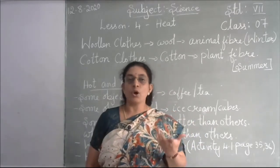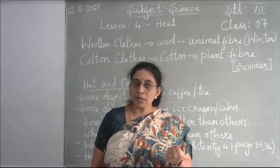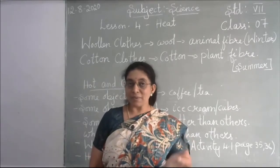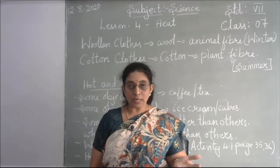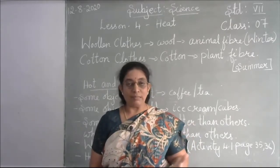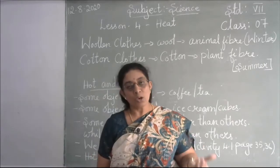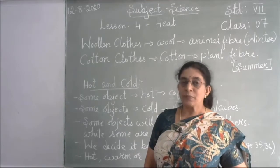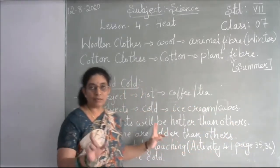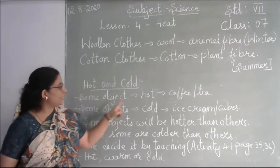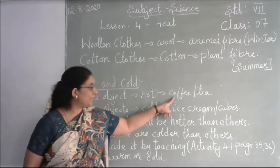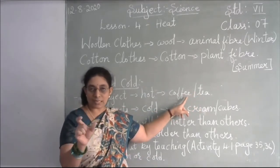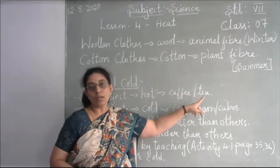Now, how do you find out whether a substance is hot or cold? We find out by touching it. By touching an object or material, we can tell whether it is hot or cold. For example, when coffee or tea is poured into a tumbler, you touch the tumbler and you will know whether it is hot or cold.